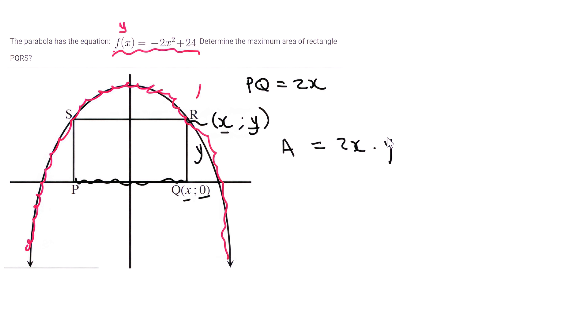Now that means R is on that point. And so for point R, you could replace this y with its equation. You could say y is equal to minus 2x squared plus 24 because it's on the parabola. So that's exactly what we're going to do. We're going to take that expression, put it in the place of y. And so we're going to get area is equal to 2x multiplied by negative 2x squared plus 24.